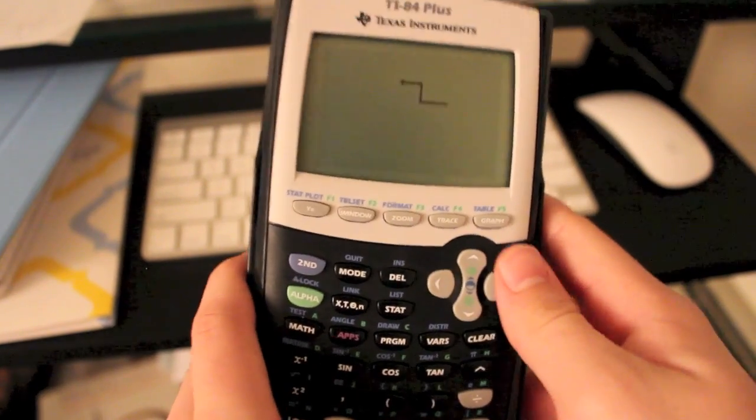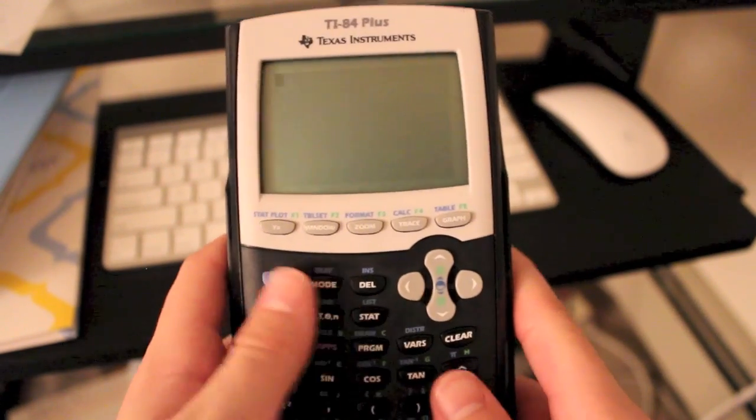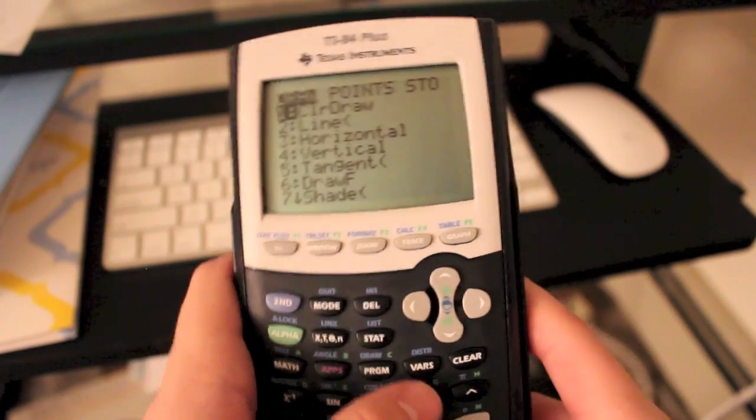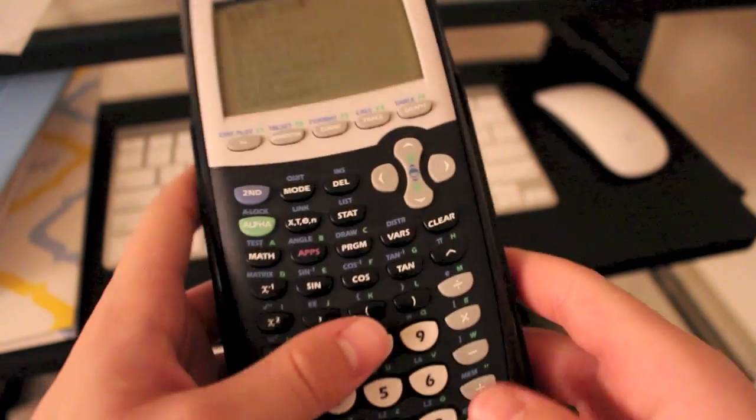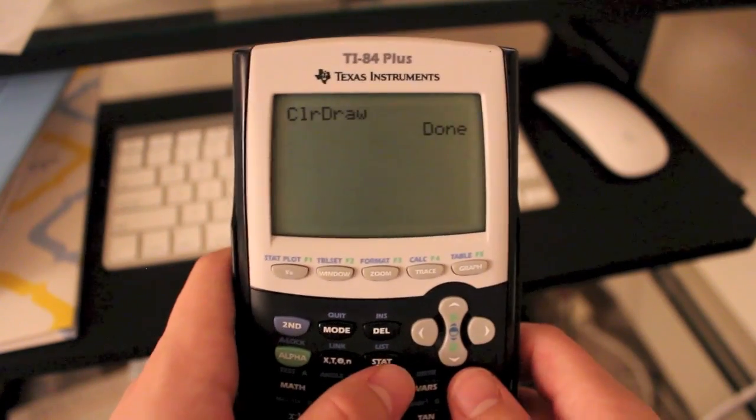So that pretty much sums it up all for drawing. So then to go ahead and clear whatever mess you've made, just go to second draw and hit enter on clear draw. And it will say done. And now you can start all over again.